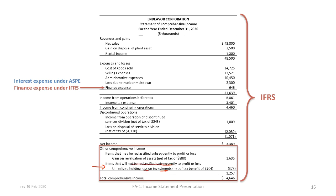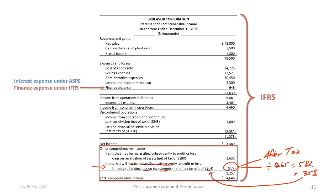The next OCI item is an unrealized holding loss on investments — something that will not be reclassified into profit and loss. The data shows a $378,000 after-tax loss. Dividing by 0.65 gives approximately $582,000 before tax, and multiplying by 35% gives a tax benefit of $204,000. The disclosure is: unrealized holding loss on investments (net of tax benefit $204,000) = $378,000. The combined impact of OCI adds $1,257,000 to net income, resulting in total comprehensive income of $4,646,000.